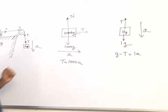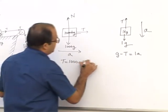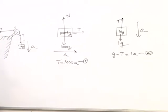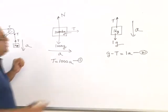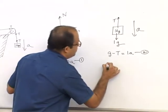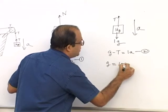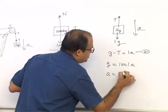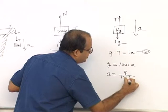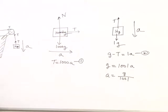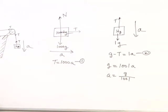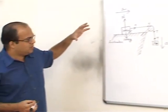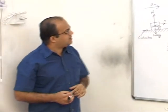Now we have two equations. Adding them, tension vanishes, so g equals 1001A, and therefore A equals g/1001. This is how we find the acceleration.